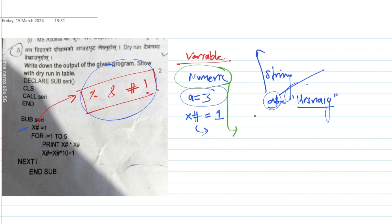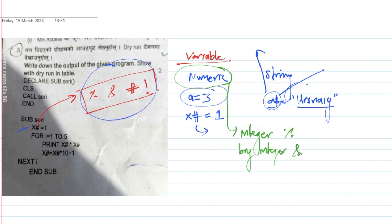There are different types of data types inside the Numeric Variable. For example, integer is represented by the percentage sign. Similarly, if you want to use a long integer — if you want to store a larger number — then you can represent it with the address sign.